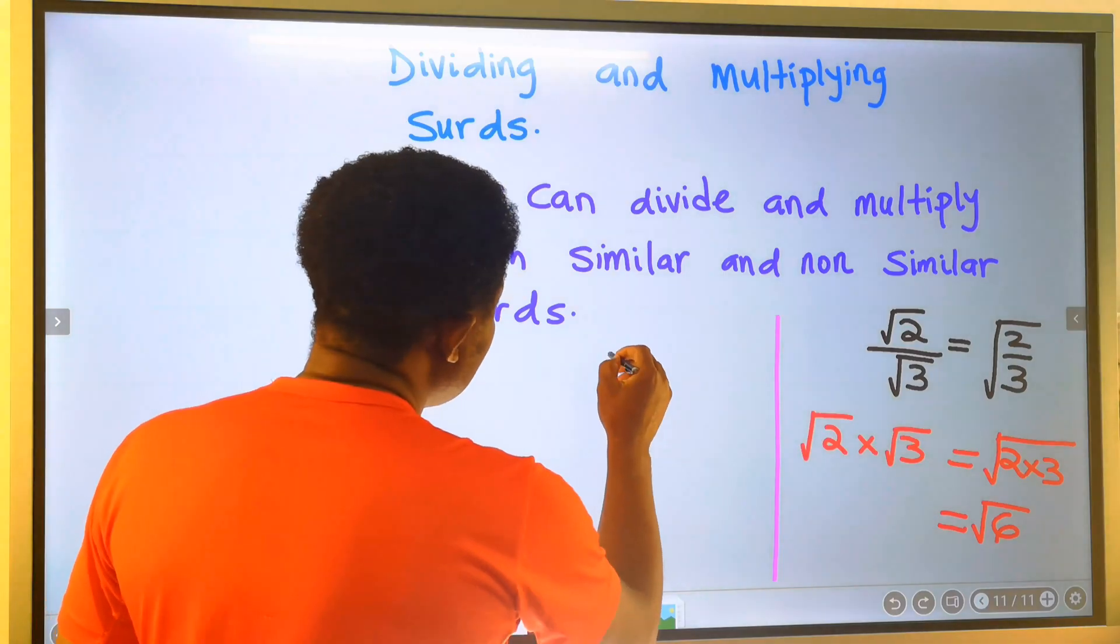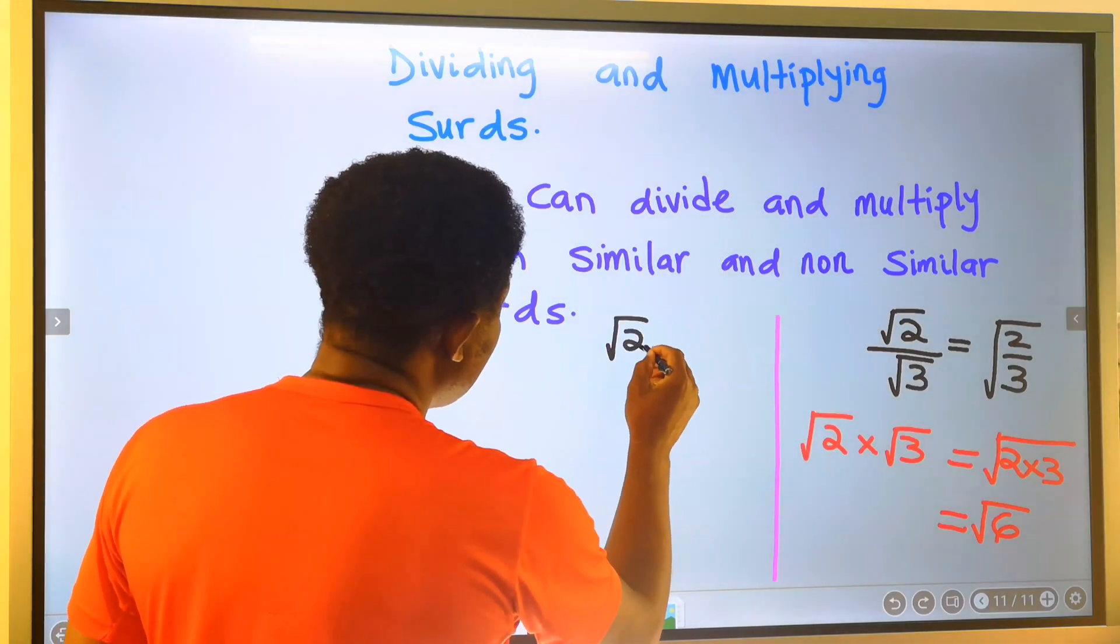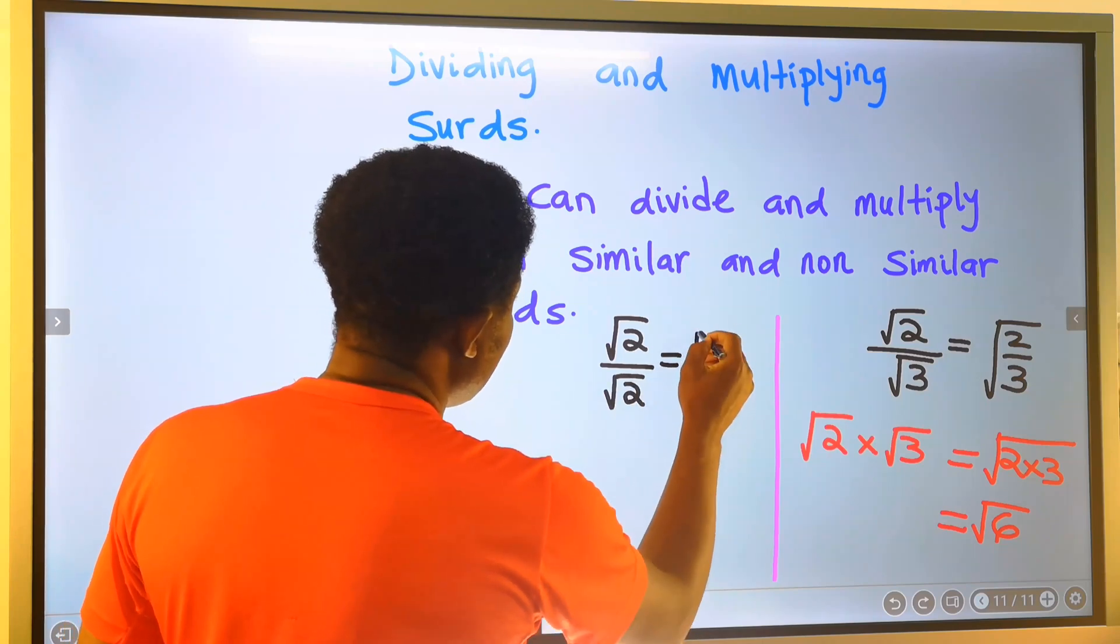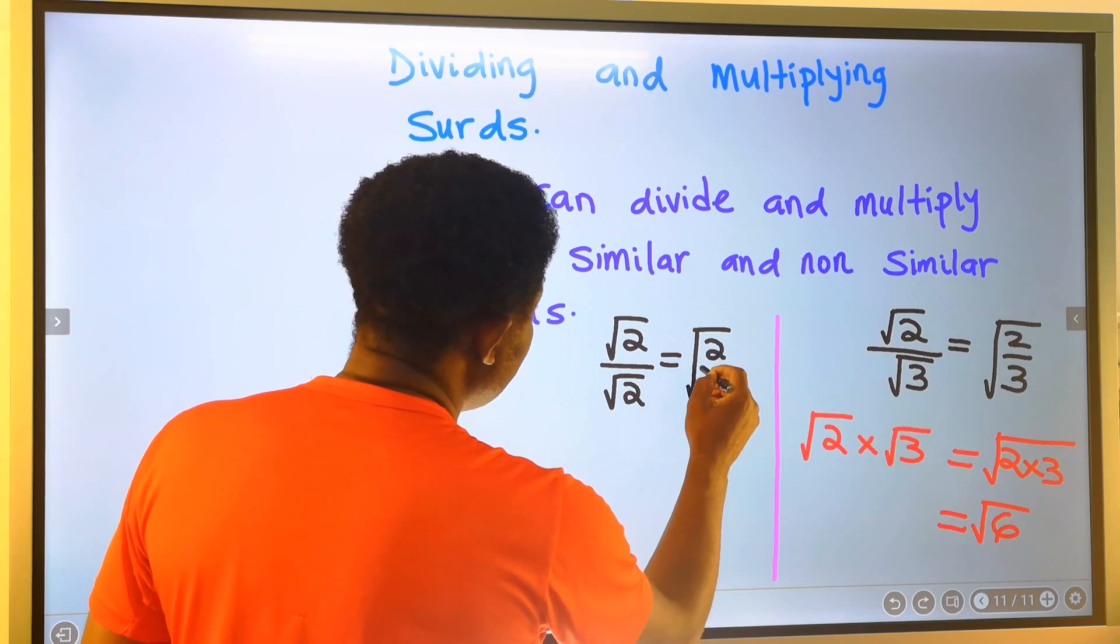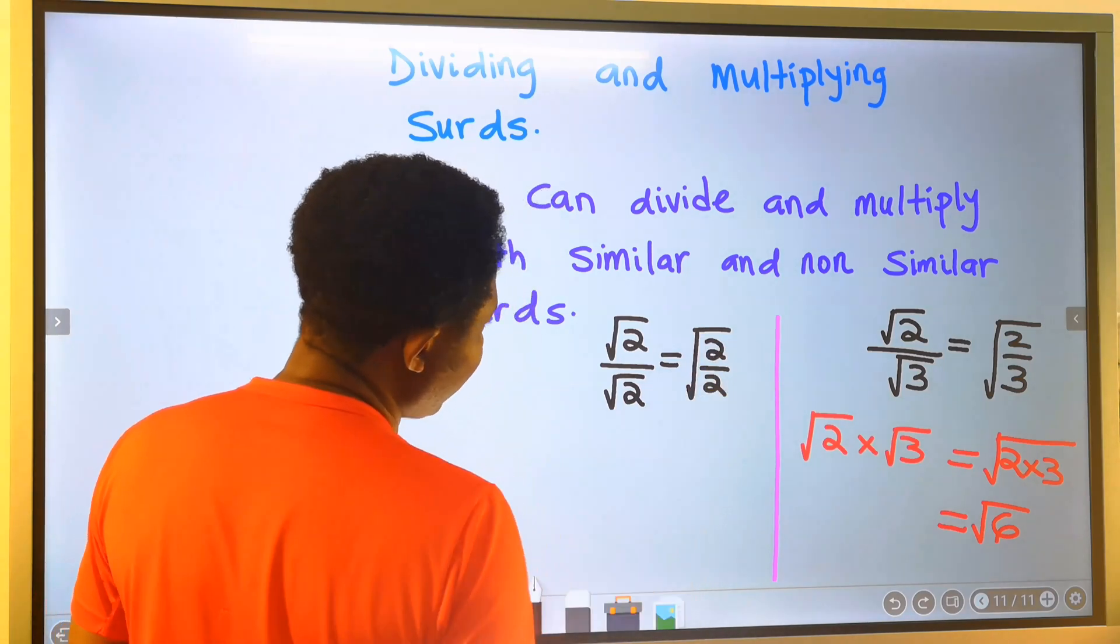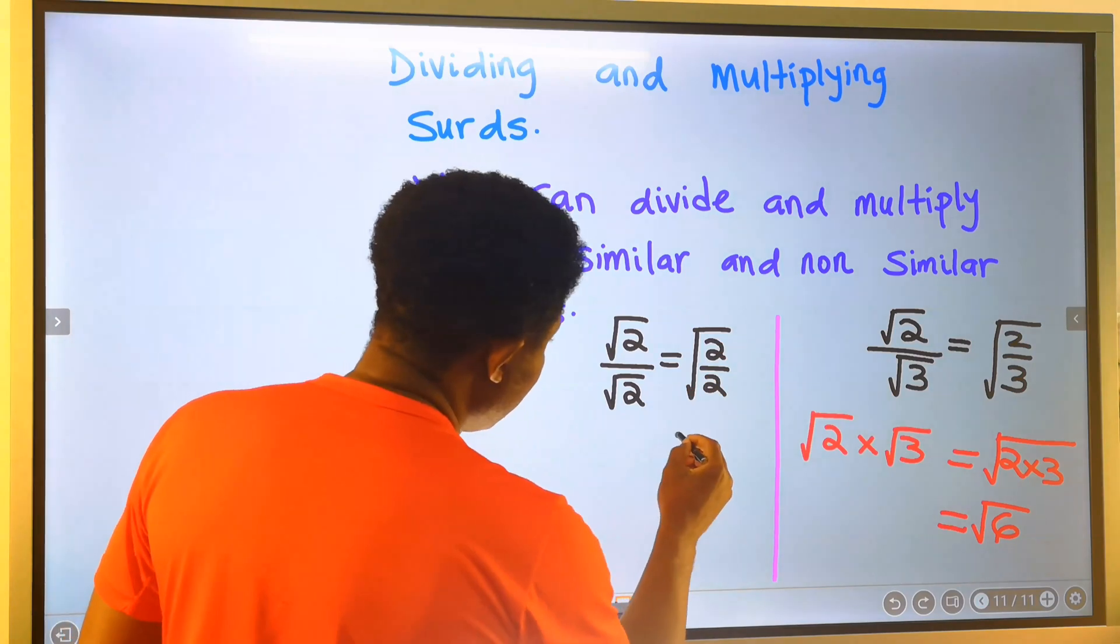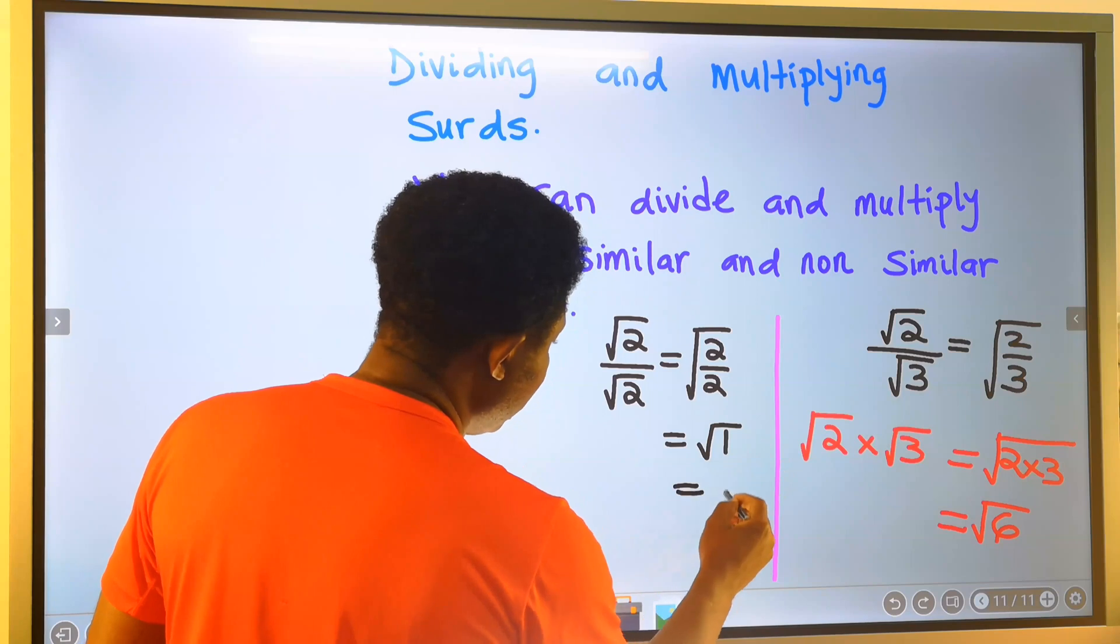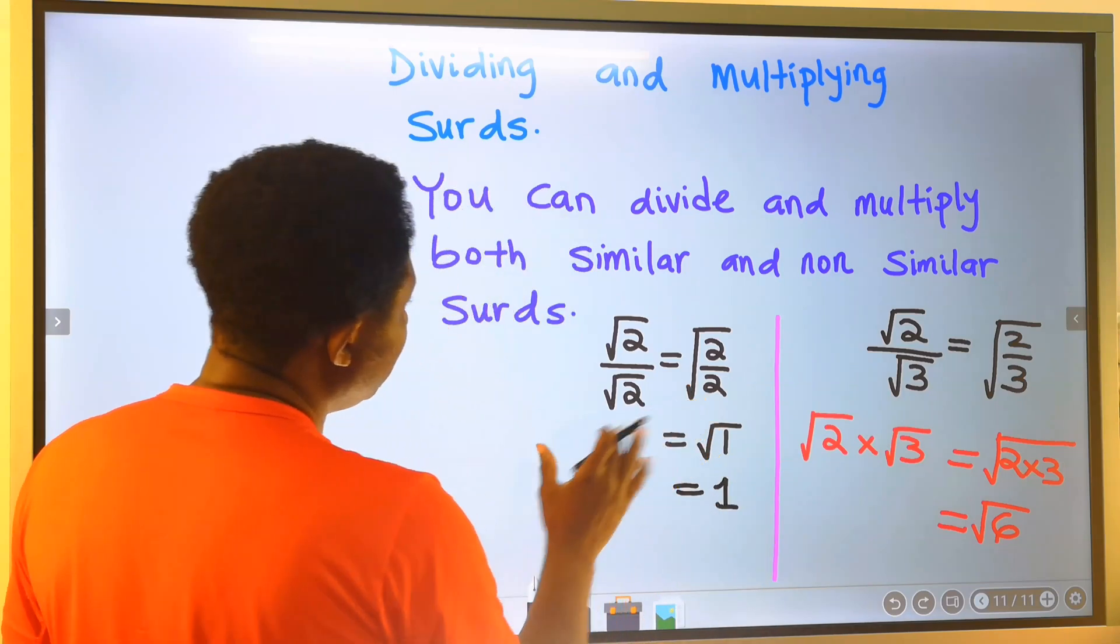We can also have that the square root of 2 divide the square root of 2 is the same thing as the square root of 2 divide the square root of 2 all inside one square root. And this is the square root of 1, which is 1. This is allowed.